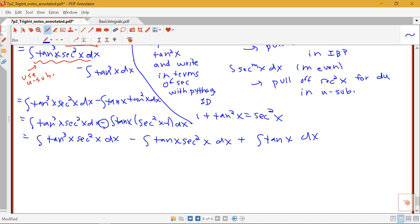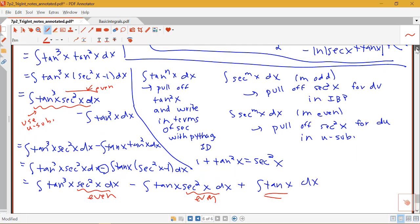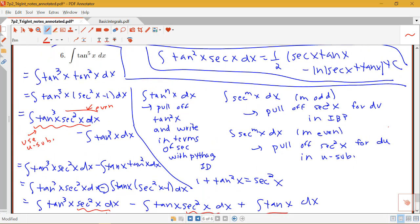Okay, so now what we have is these two integrals here with the secant squared x pulled off nicely for us. So we can use u sub on each of those, and we have our rule for the integral of tangent. Notice that I started initially with an integral of tangent to the fifth. Using this technique where I replaced, pulled off a tangent squared...